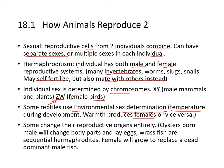Some animals change their reproductive organs entirely — oysters are born male but will change body parts and lay eggs. Wrasse fish are sequential hermaphrodites, where females will grow to replace a dead dominant male fish.